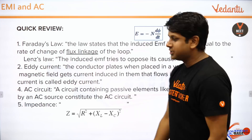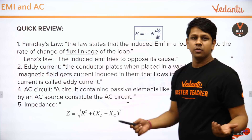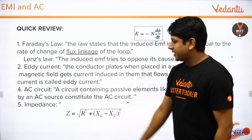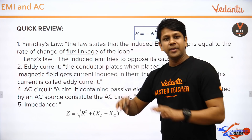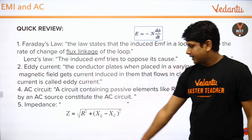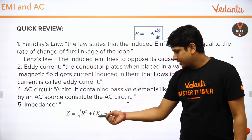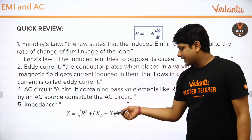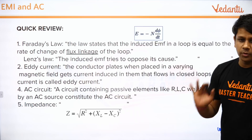Now we will talk about AC circuits. We will see that in an AC circuit we have a resistor, a capacitor, and an inductor. Here we have impedance, which is very important and replaces resistance. Impedance Z equals √(R² + (X_L − X_C)²), where X_L is inductive reactance and X_C is capacitive reactance.